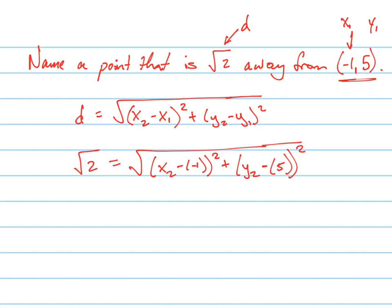How many solutions are there to that equation? There's a ton of solutions. Think about this point — if you have the point (-1, 5), it's going to be up here somewhere. √2 away from that is basically a circle, so it's this point, this point, this point. There's actually an infinite number of points you can choose, so all you have to do is find one that works.